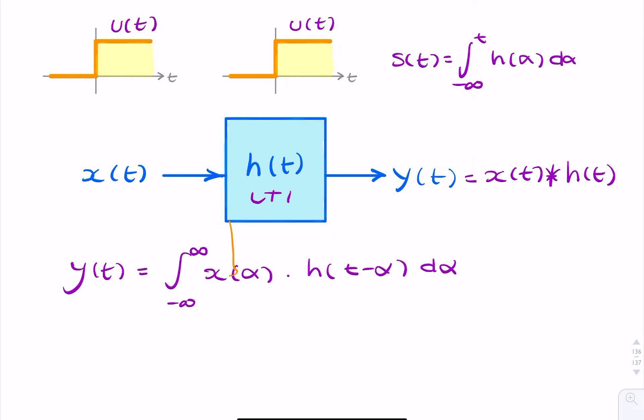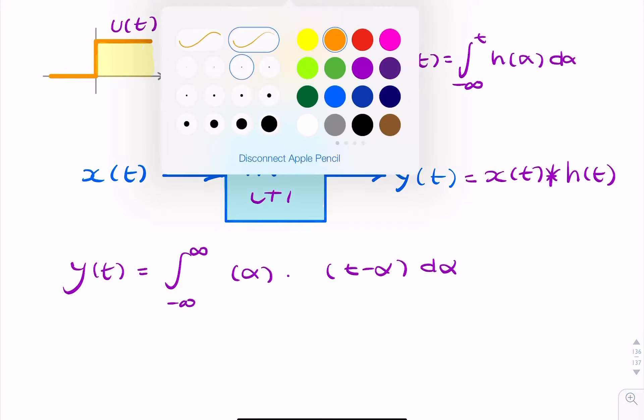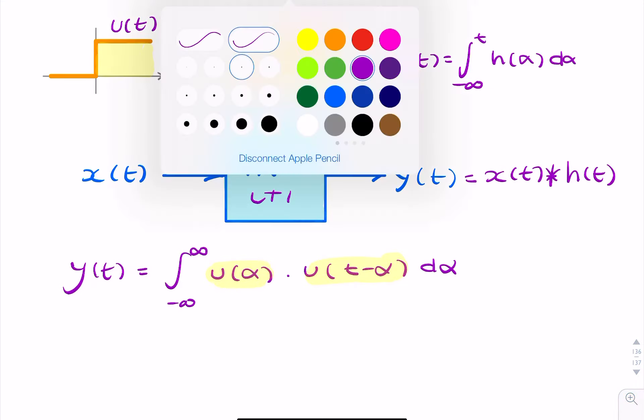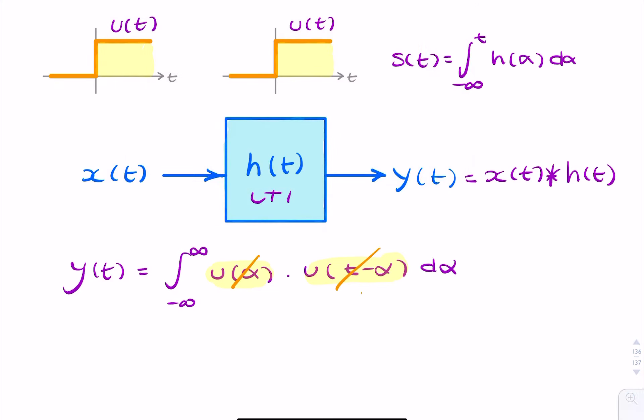Now, X is simply the unit step, and H is the unit step. So we can just replace X and H with our unit step function. Now remember, both of these unit steps, they simplify to exactly 1. So I can replace both of these with 1. But what each of these does is it changes the respective limits. So this one will change the lower limit to 0, and this unit step will change the upper limit to T.